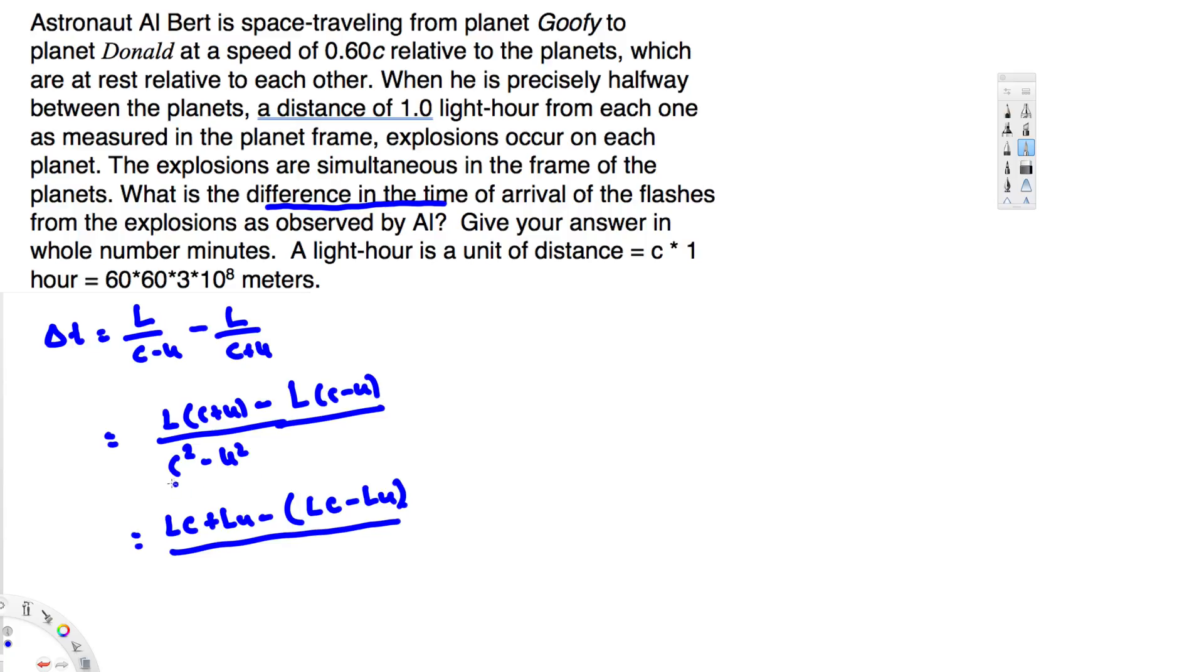To write this in a better way, we can divide both by C². That gives us 1 - U²/C² in the denominator. If you look at the top, we can cancel something. We have LC and negative LC, so we can cancel those. The LU terms add up to give us 2LU.